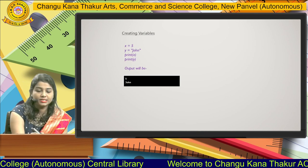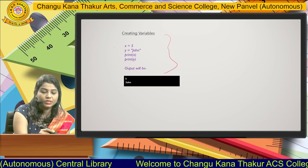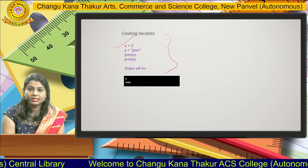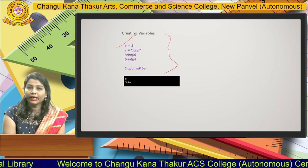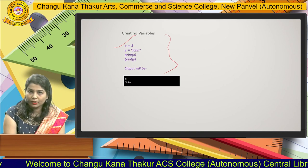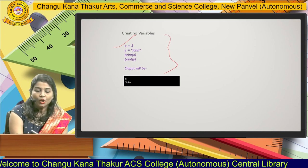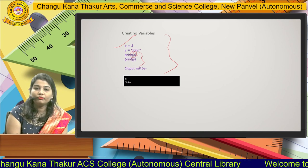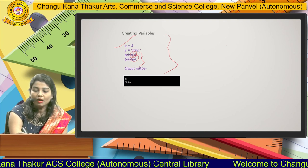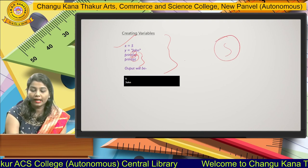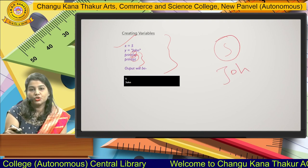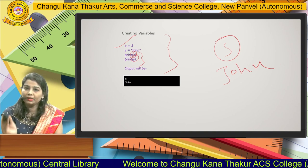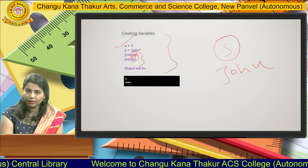In the next slide, there is a program: x equals 'Phi', y equals 'John'. If you want to print any value on the output screen in Python, you use the print function with x and y. The output will be the value of x, which is 'Phi', and the value of y, which is 'John'. This is a simple program you type in the IDLE screen.